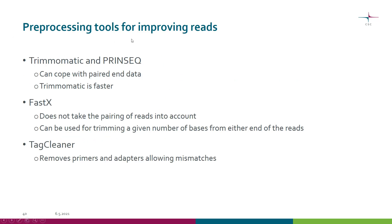The different types of tools available in the preprocessing category include Trimmomatic and Prinseq, which can cope with paired-end data. Of these two, Trimmomatic is faster. There are also FastX-based tools; FastX is not able to take pairing into account, but that doesn't matter for very simple trimming such as removing a certain number of bases from either end of the read — in that case you can use FastX even for paired-end data. TrimCleaner, on the other hand, is able to remove primers and adapters and also allows mismatches, which you can control with parameters.